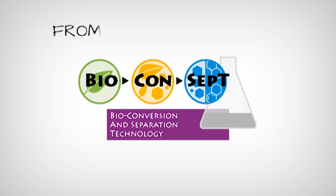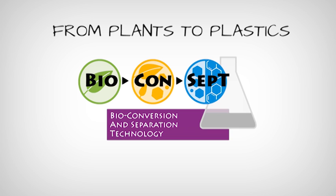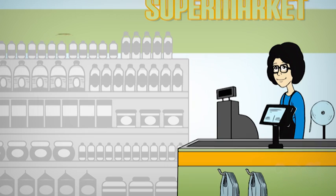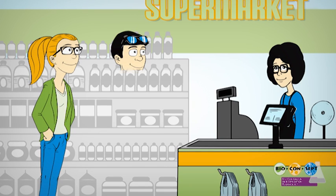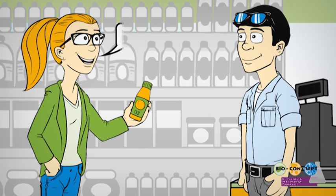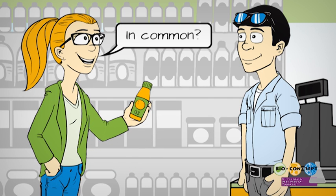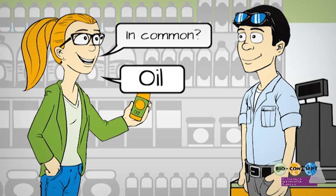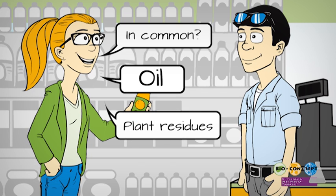Bioconcept: from plants to plastics — bioconversion and separation technology. Emma and Ben are in the supermarket. While paying, Emma asks: do you know what plastic bottles and sunglasses have in common? Ben has no idea, so Emma explains that both products are generally made from oil, but they can also be made from plant residues. These are bioplastics.